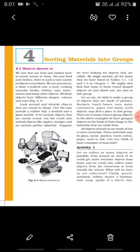Suppose we are looking for objects that are edible. If we list edible objects, we can make a different list. We might also find that some of the round-shaped objects we just listed are also in this edible group.